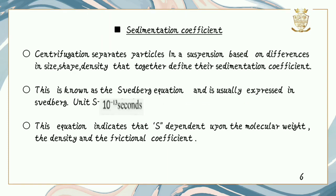The sedimentation coefficient, or the Svedberg equation — centrifugation separates particles in a suspension based on differences in size, shape, and density that together define their sedimentation coefficient. This is also known as the Svedberg equation and is usually expressed in Svedberg units as 10 raised to minus 13 seconds. This equation indicates that S depends upon the molecular weight, the density, and the frictional coefficient.